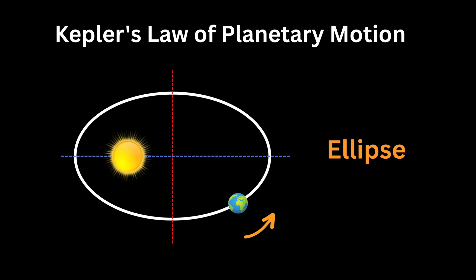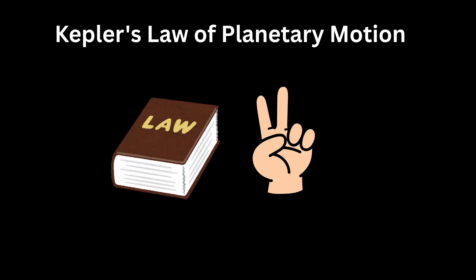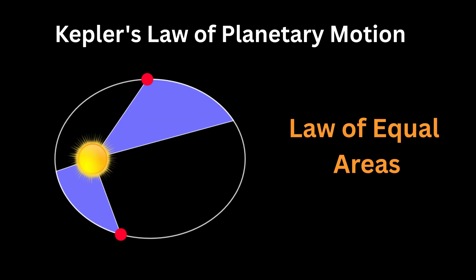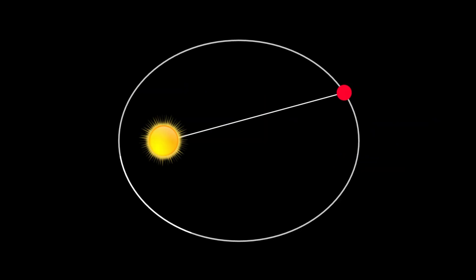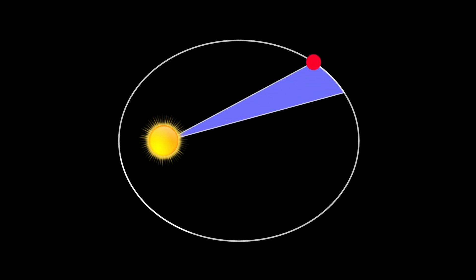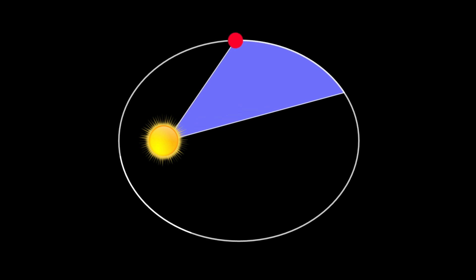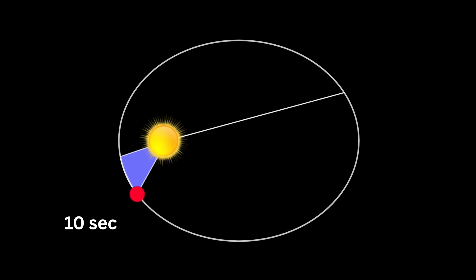Second Law: This law is also known as the Law of Equal Areas. If you draw an imaginary line from the sun to a planet and watch that line over equal intervals of time, the area it sweeps out is always the same for each equal time interval. For example, if in 10 seconds a planet moves from one point in its orbit to another, it sweeps out a certain area, say A1.